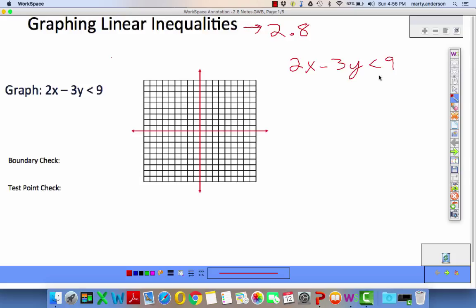We could graph it using the standard form, but you've got to watch out for negative signs because we're going to have a dotted or solid line and shade above or below. You'd rather solve for y first. It's going to make your life easier.